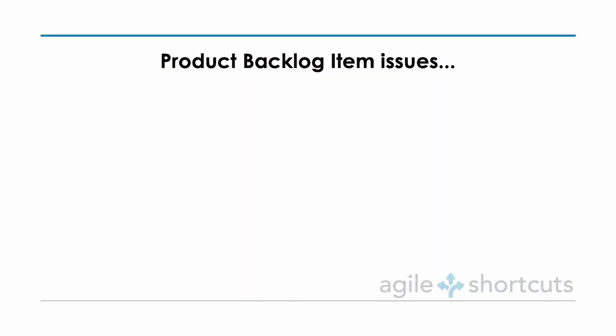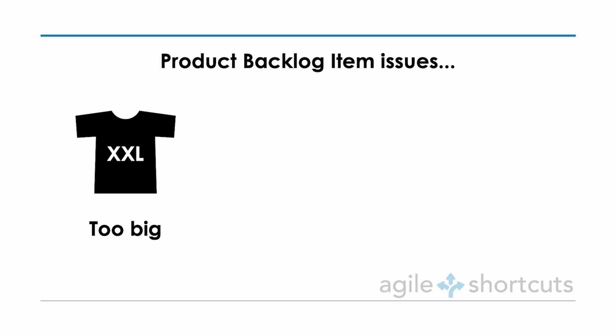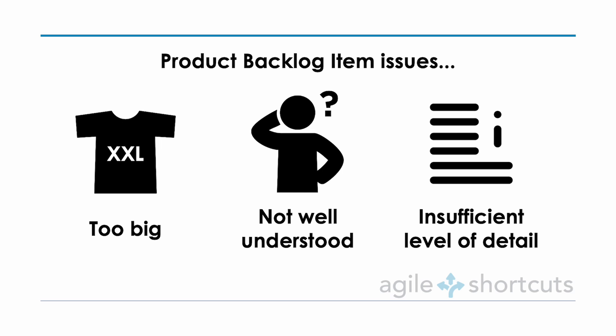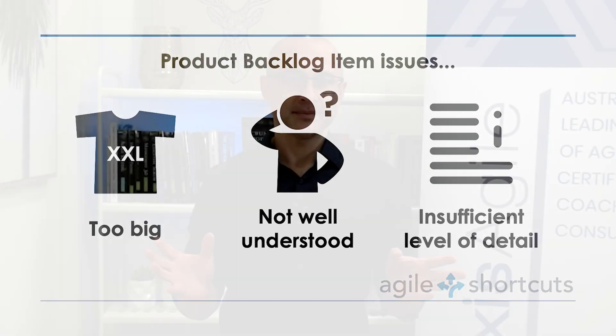In my first video I mentioned that one of the reasons teams don't complete their sprint plan is due to inadequate product backlog refinement. So in this video let's focus on that. Typically what happens is teams bring product backlog items into their sprint with one or a combination of the following three issues: firstly, those items are too big; secondly, they are not well understood; and thirdly, they may have an insufficient level of detail.